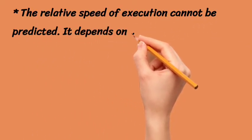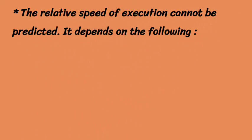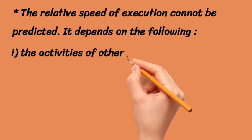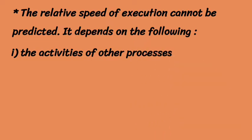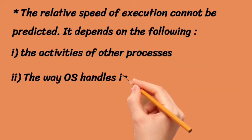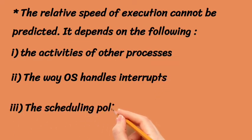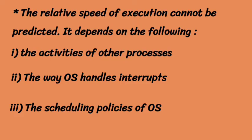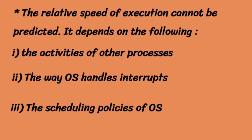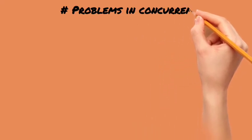We can't predict execution speed, but the speed depends on some things. First, it depends on the processes — what the activities are and how the processes are acting when interrupts are utilized. Second, how we handle the work for an interrupt matters. And third, the scheduling policies in our operating system also affect execution speed.